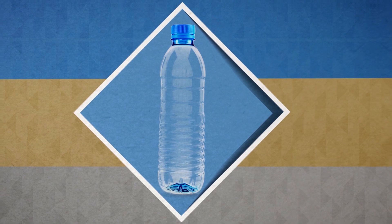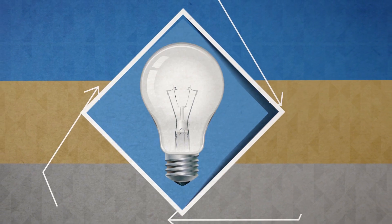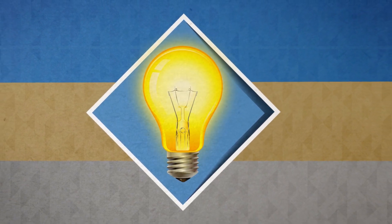Recycling a single plastic bottle conserves enough energy to light a 60-watt bulb for up to 6 hours.